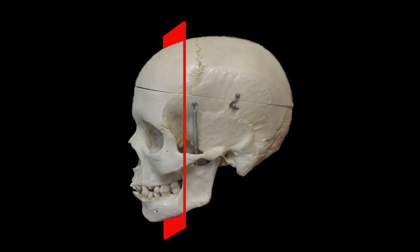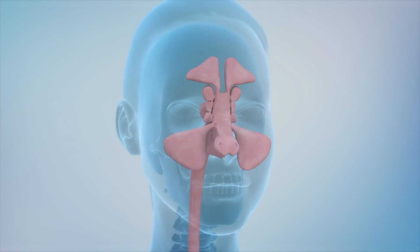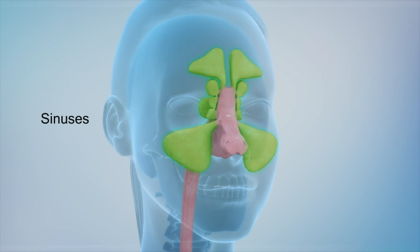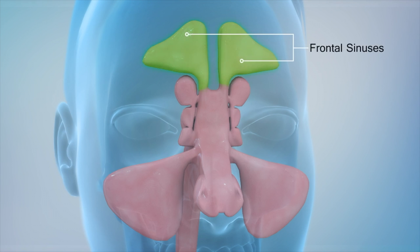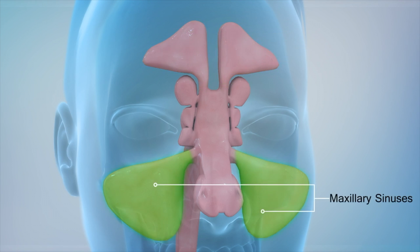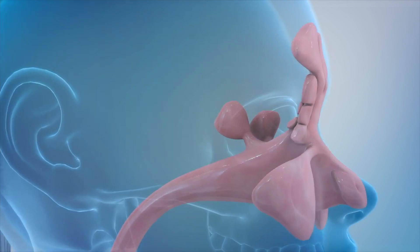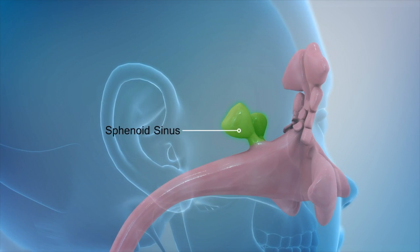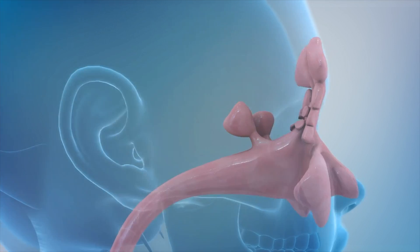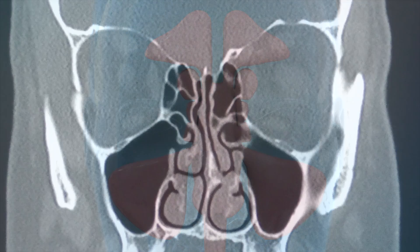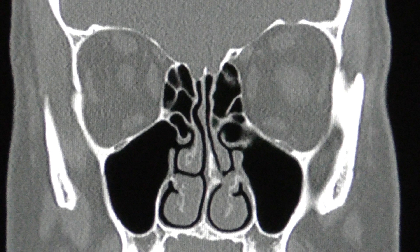The orientation that is most easily understood by a layperson is the coronal plane. Here is an animation showing the sinus anatomy in the coronal plane. Here is how it would look on a CT sinus scan in the coronal plane.